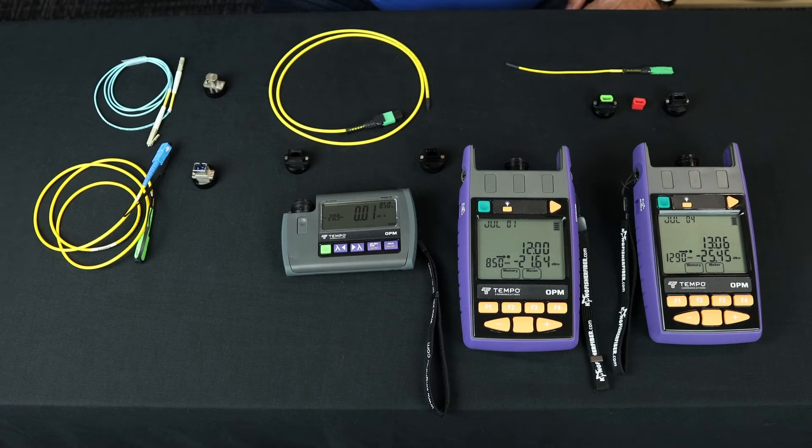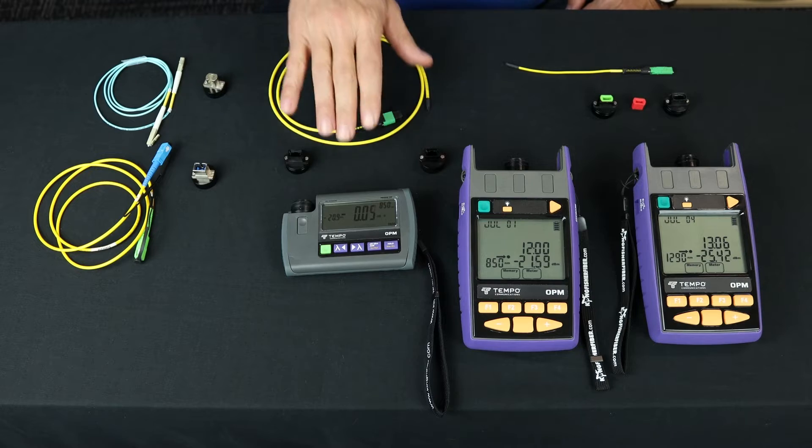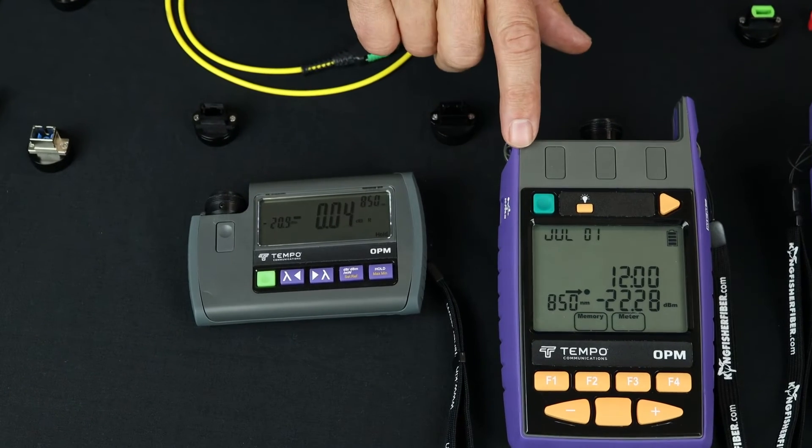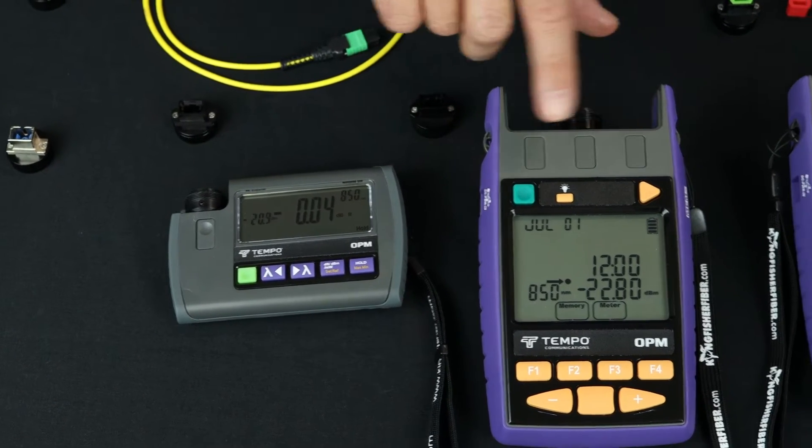So I'm here with the Kingfisher team's XL Series optical power meters, and we have four different variants. We have two small pocket size products and two larger handheld size products that can store data.